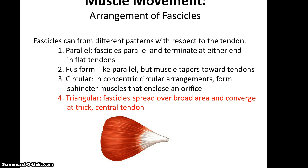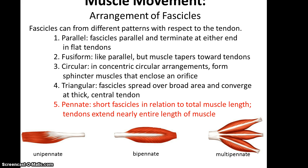Then there's triangular, where fascicles are spread out over a broad area but converge down into a tendon, looking like the shape of a triangle. There's also pinnate, where you have short fascicles relative to the length of the muscle — they don't run the entire length; instead, the tendon runs most or all of the muscle's length. Pinnate muscles can be unipinnate (fascicles coming off one side of a tendon), bipinnate (coming off both sides, looking like a feather), or multipinnate, where multiple tendons shoot out, creating a bunch of little feather-like structures connected at one big tendon.